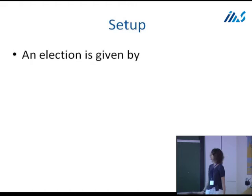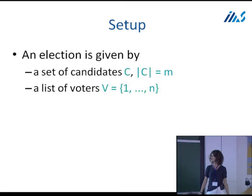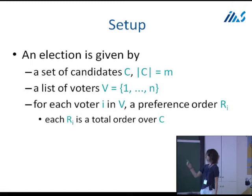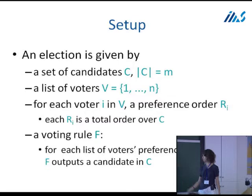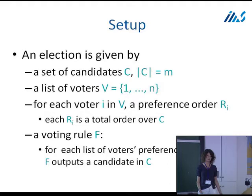Let me start by setting up the formal notation. An election is described by a set of candidates - M candidates and N voters. Each voter has a preference order over the candidates, a total order of the elements of set C - a total ranking of all candidates. We have a voting rule that looks at all preference orders, called a preference profile, and outputs a candidate in C, the election winner. So all voters rank candidates, the voting rule looks at the rankings and outputs the election winner.